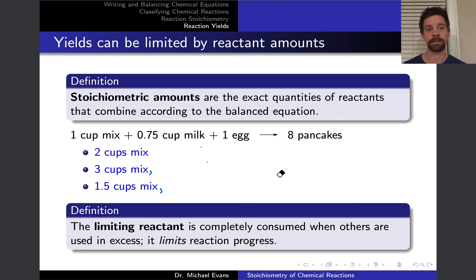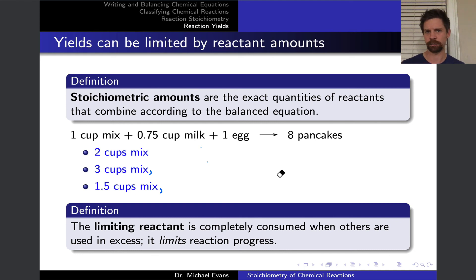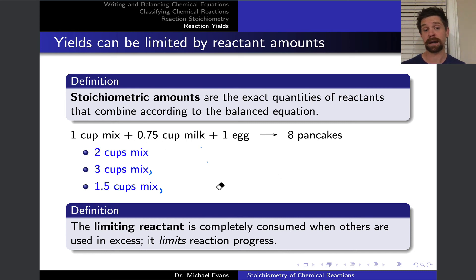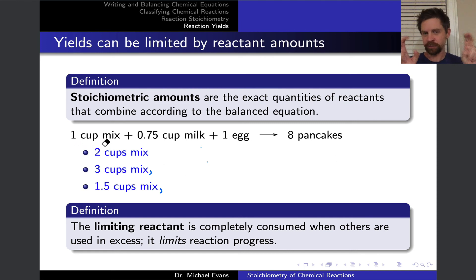The stoichiometric amount is the exact quantities of reactants that combine according to the balanced chemical equation, and it's often talked about in a relative sense. Going back to our pancake recipe as an analogy for a balanced chemical equation, there is a stoichiometric amount of each ingredient corresponding to given amounts of mix. What's the stoichiometric amount of milk that corresponds to two cups of mix? Based on our balanced chemical equation, one cup reacts with 0.75 cups of milk.